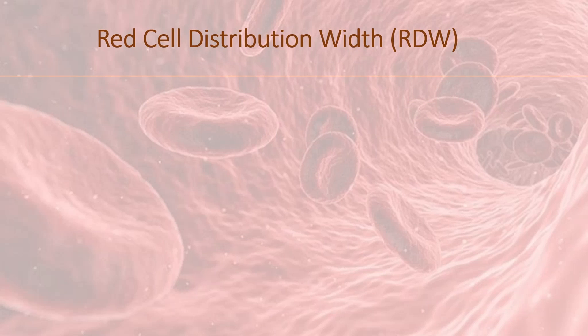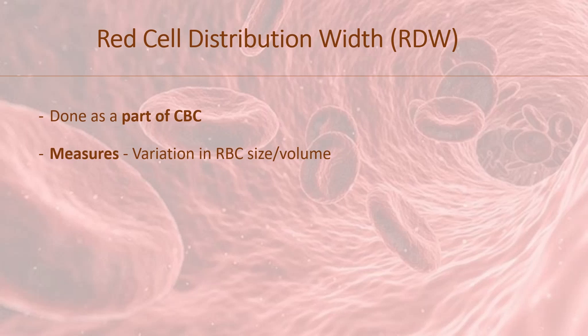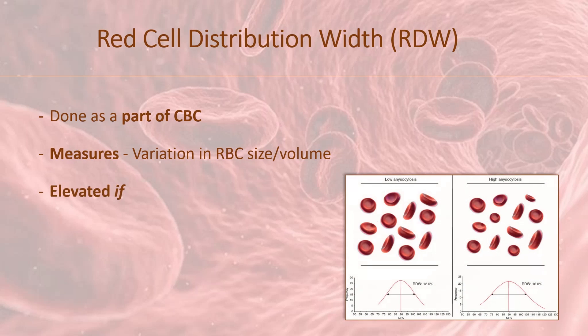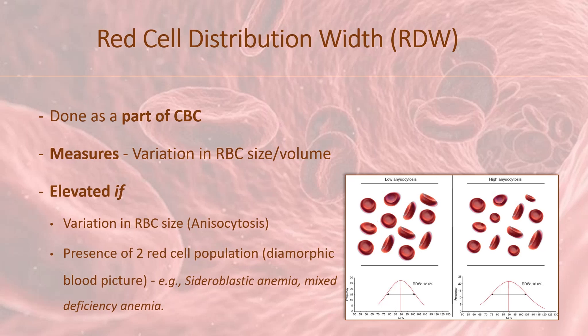Red cell distribution width is done as a part of a complete blood count. It measures variation in red blood cell size or red cell volume. It becomes elevated if there is variation in red cell size. If RDW is elevated in the CBC result, anisocytosis is expected on peripheral blood smear review. Besides anisocytosis, RDW is also elevated if there is presence of two red cell populations, for example a dimorphic blood picture, like seen in sideroblastic anemia and in mixed deficiency anemia.